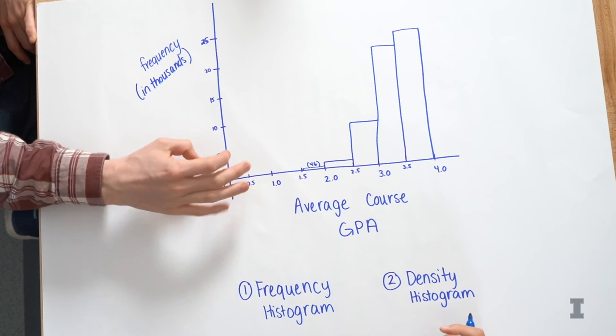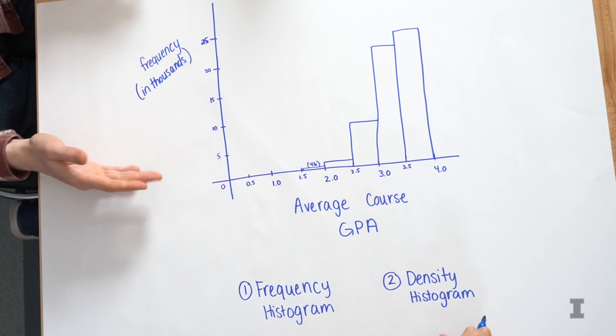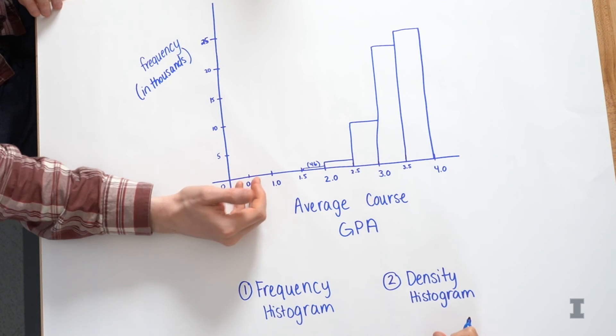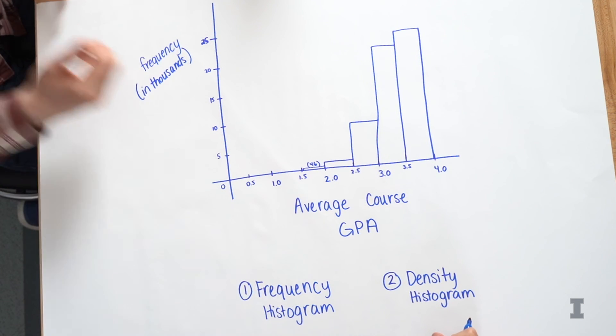But there's no data. There are no courses at all at the University of Illinois that have an average course GPA in the D or the C. That is good. I like to hear that.